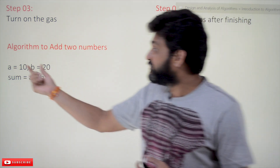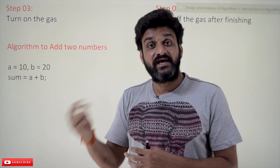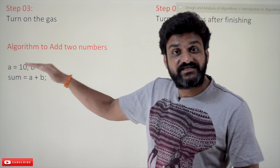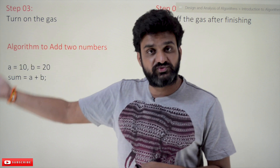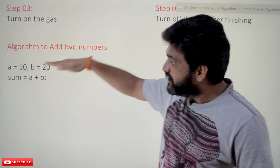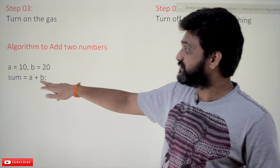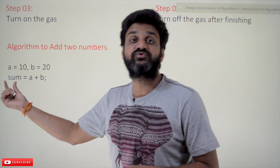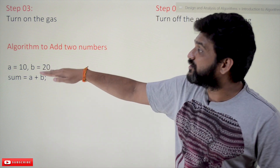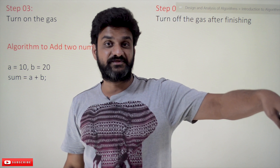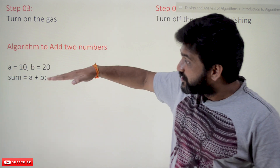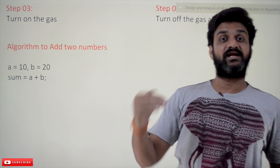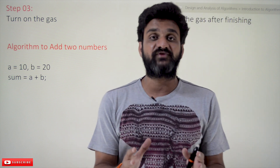To add two numbers, we define two variables: a, assigned a value of 10, and b, assigned a value of 20. The first step is to allocate the variables and assign values to them. In the next step, we take another variable, add those two variables together, and assign the result to that variable. These are the two steps needed to write an algorithm to add two numbers.